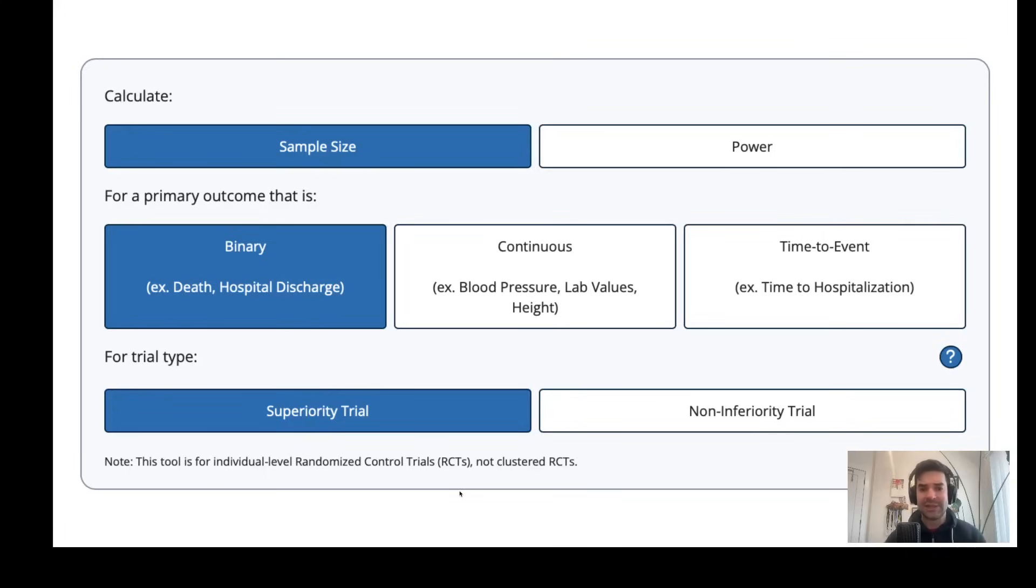So this is what it looks like. You can click and select, do you want to calculate sample size or do you want to calculate power? You select what type of outcome your study has. And then is it a superiority trial, which is the vast majority of clinical trials, or a non-inferiority trial?